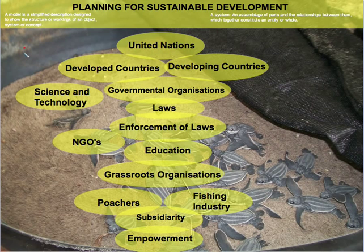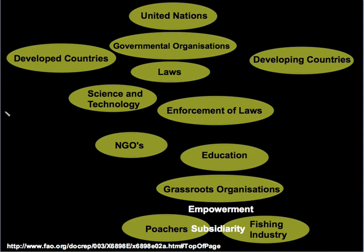Let's take a look back at our last lesson, which required us to plan for sustainable development using a model of all the parts, groups, or stakeholders and how they link together to solve the problem of the decline of leatherback turtles. We noted that the problem of decline of the leatherback turtle was truly an international issue, with the turtles found in all the oceans of the world and nesting on a range of beaches around the equator. With a problem of this nature, meaningful solutions can only be had through international cooperation, and where this is required the United Nations must play a key role.